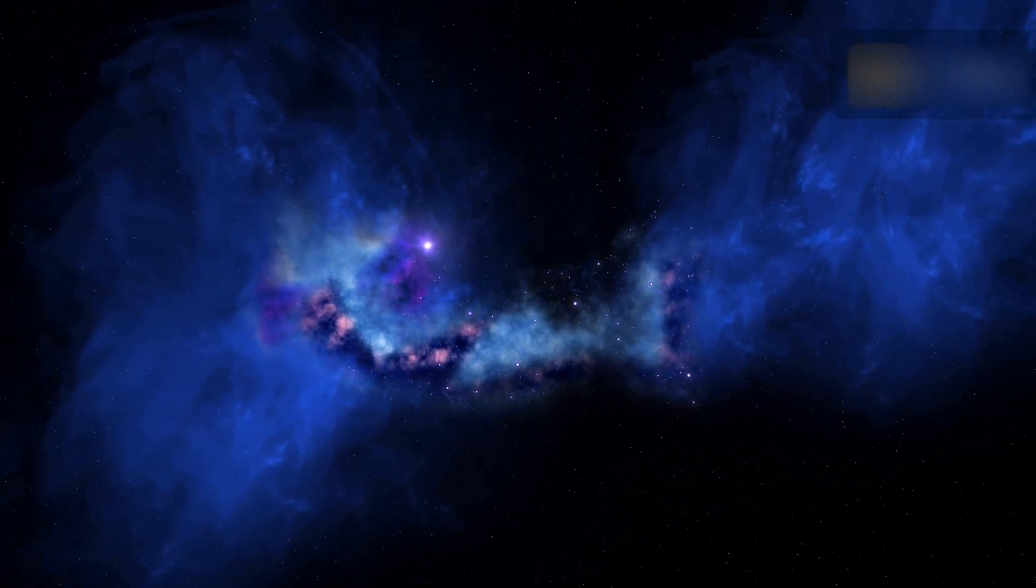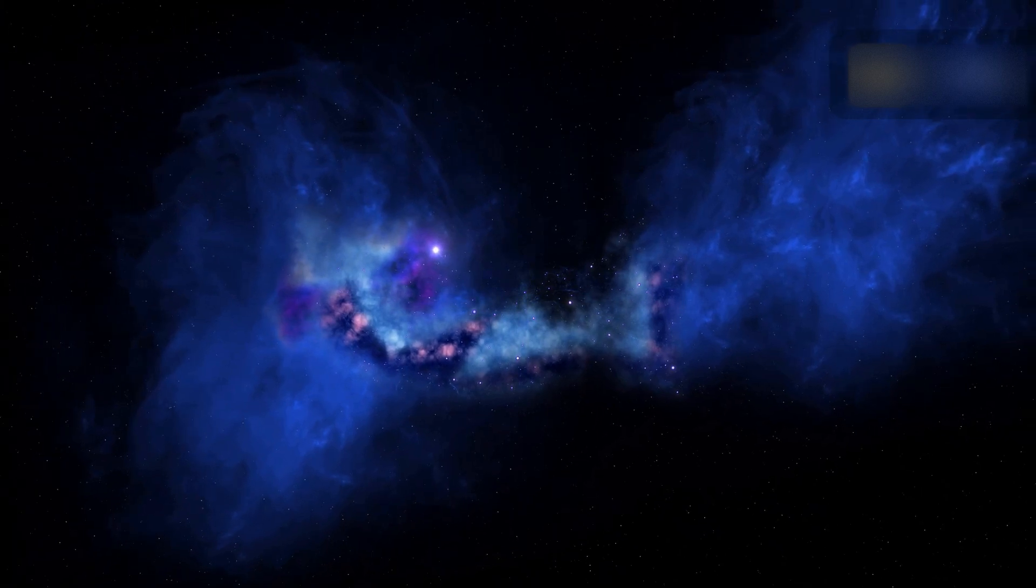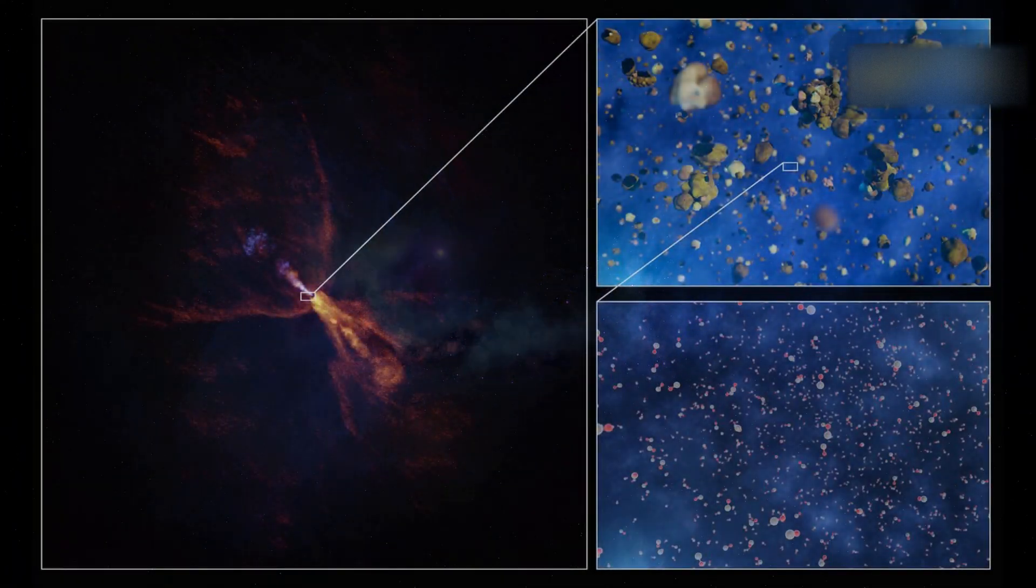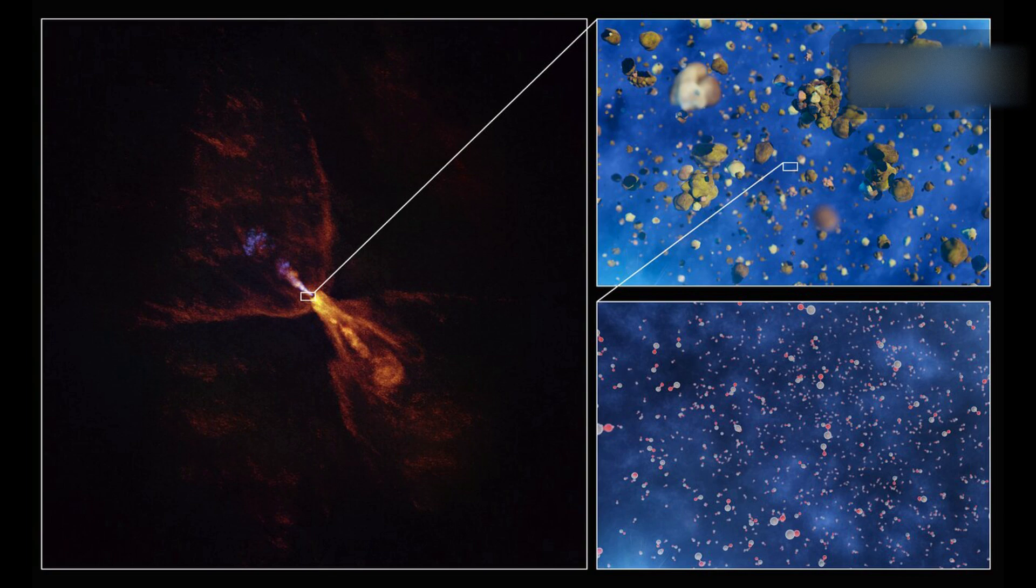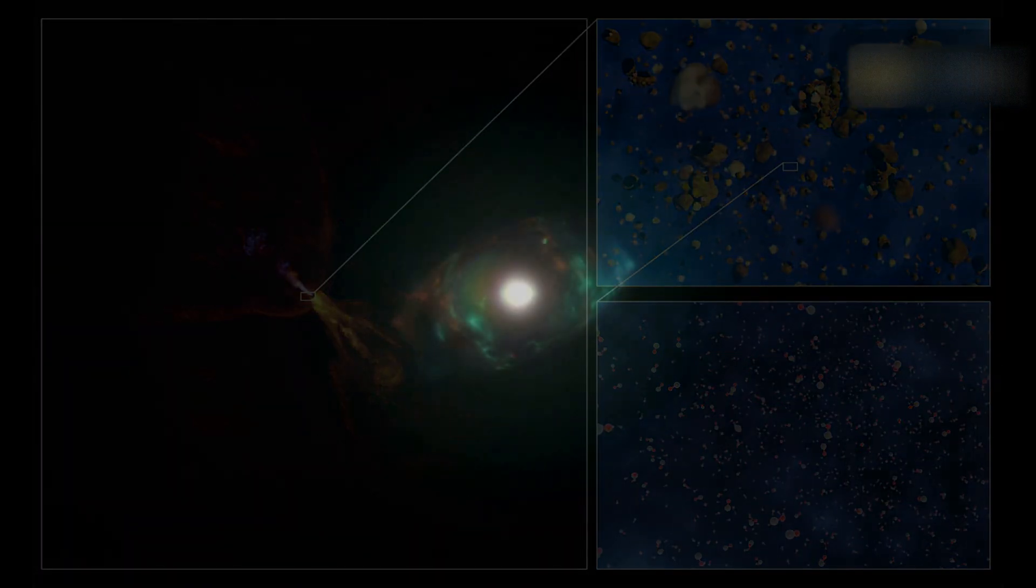For the first time, we have identified the earliest moment when planet formation is initiated around a star other than our Sun. Astronomers have witnessed the birth of a planetary system that could one day resemble the solar system.